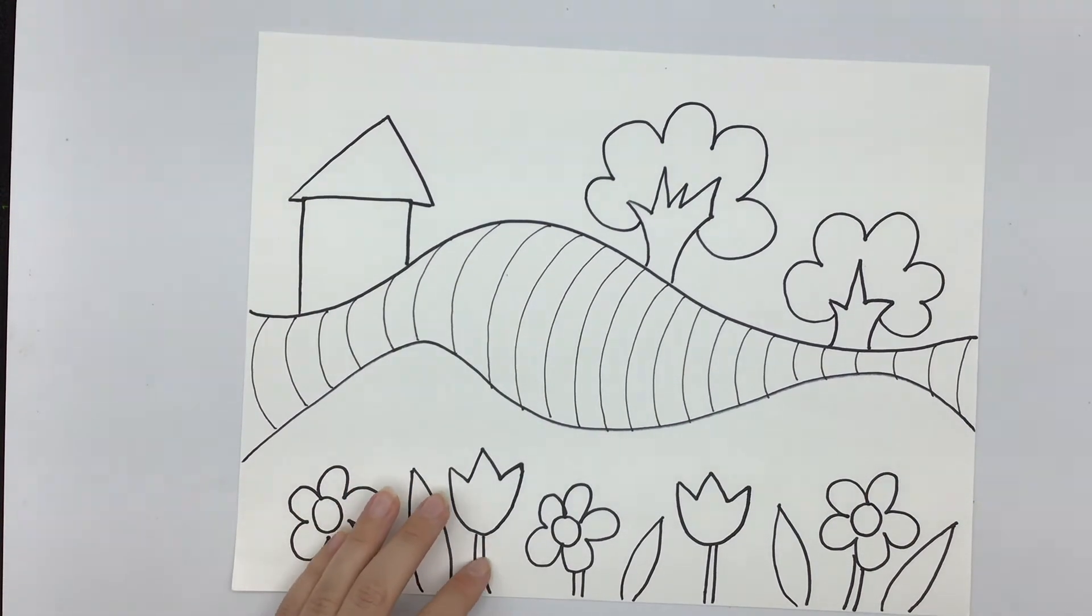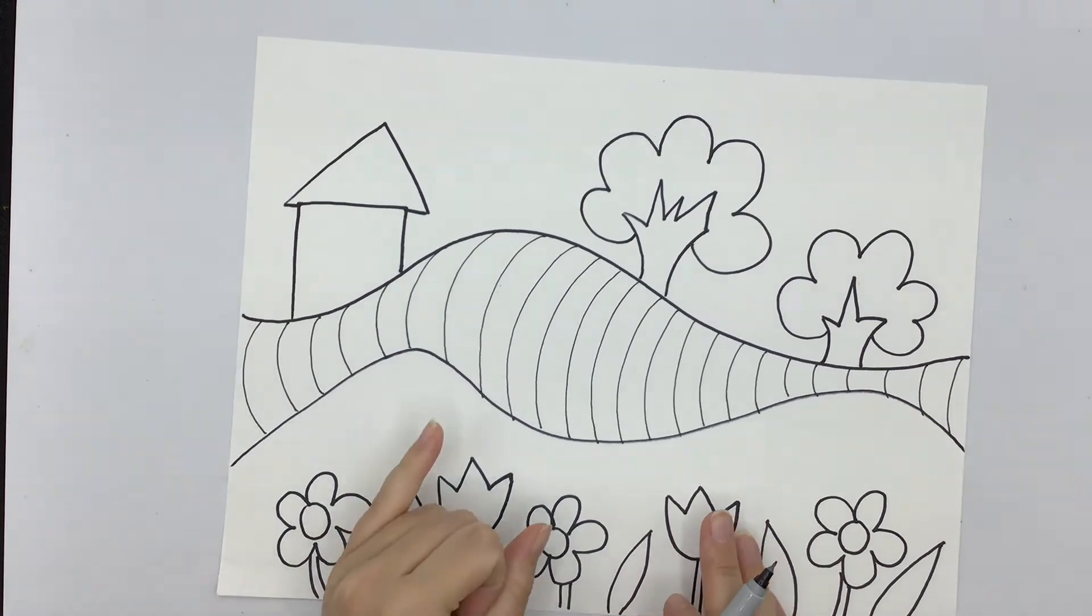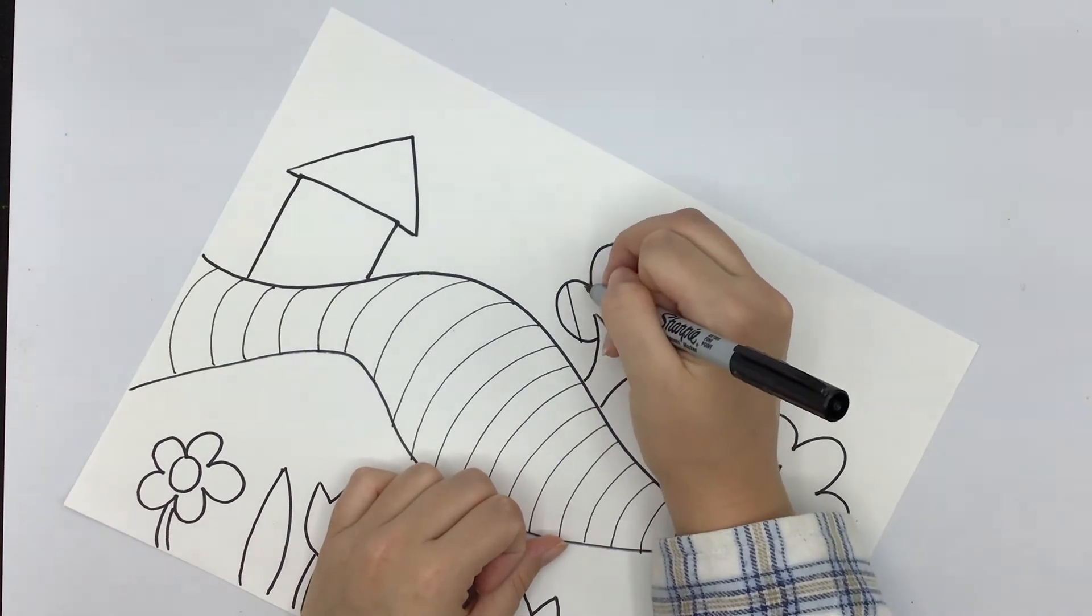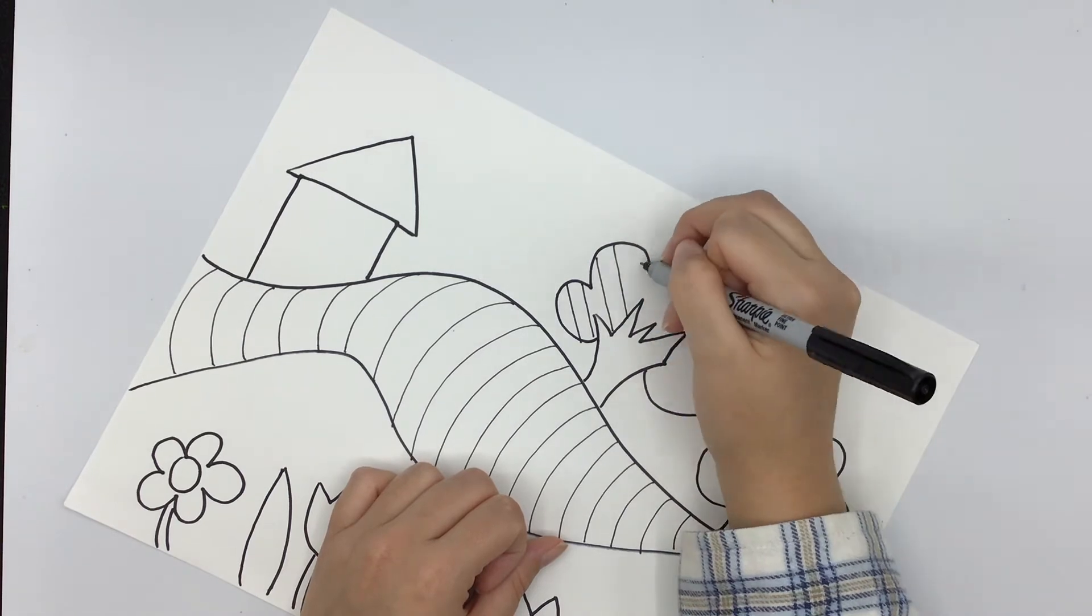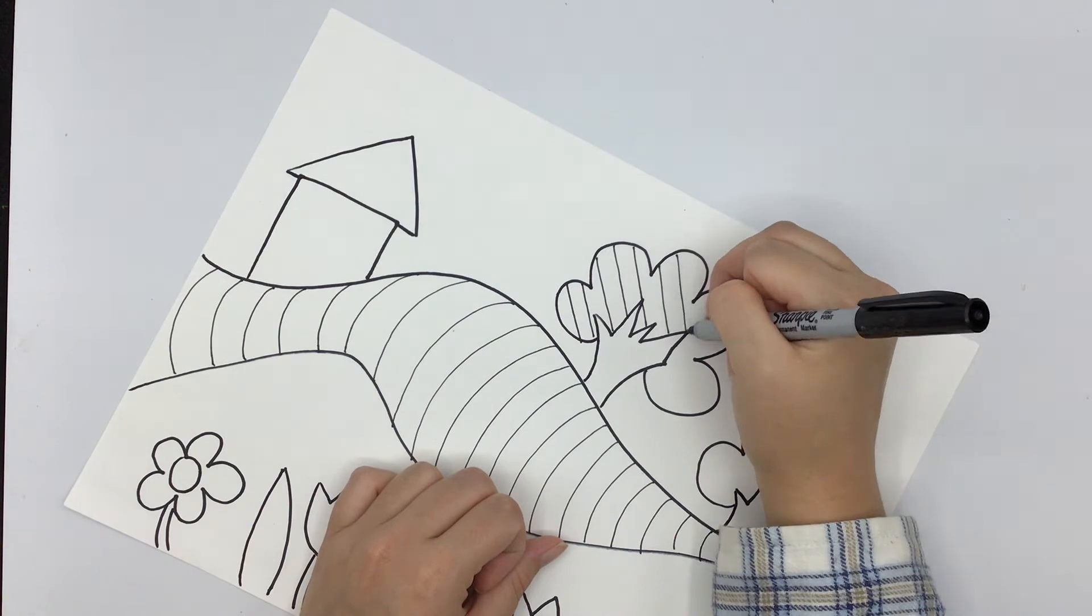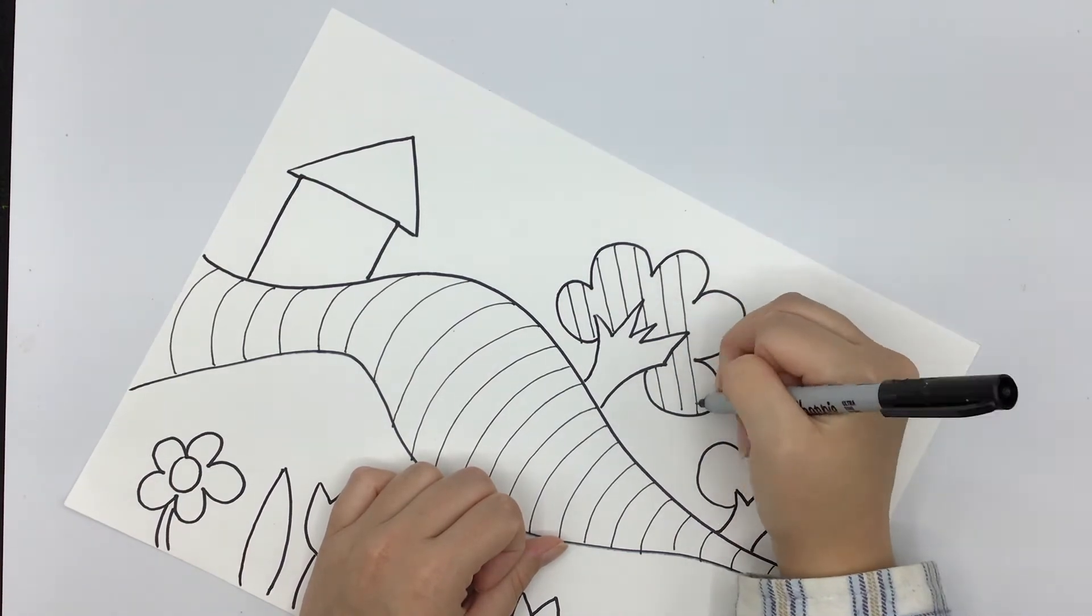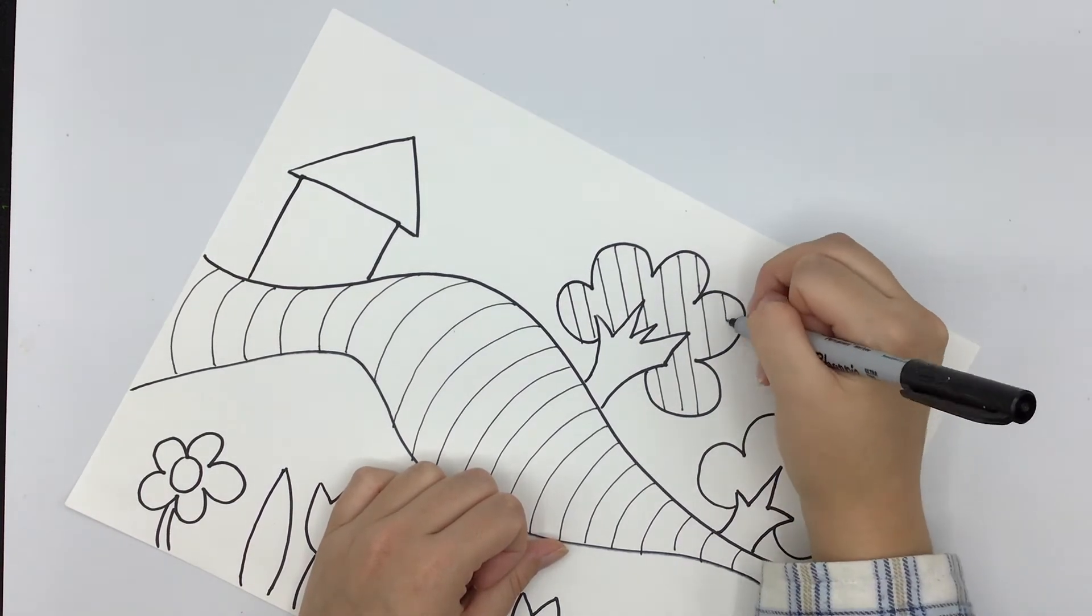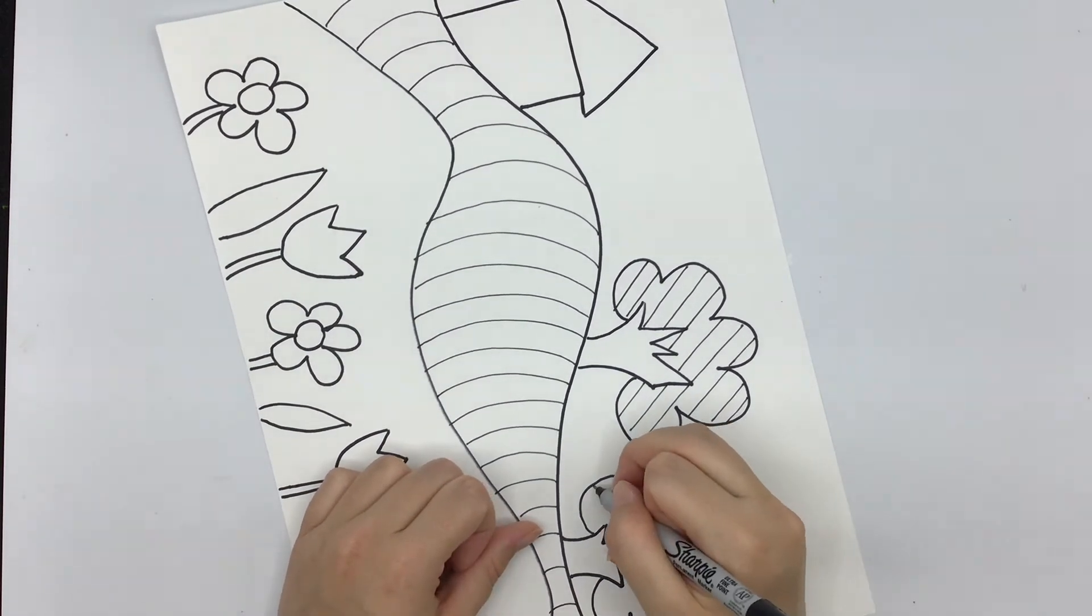There we go. Then since we're doing pop art I want to add some other lines in some other places. So maybe on this tree maybe I'll make some diagonal lines that go across this tree. I don't want to make them too close together because when I go to color them in it might make it really hard to color them in if they're too close together. I have some diagonal lines on that tree.